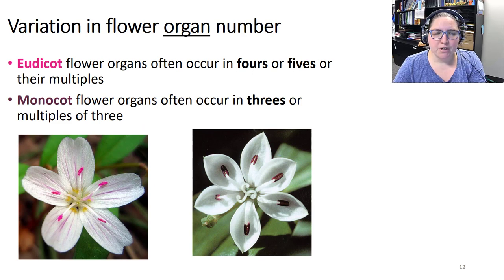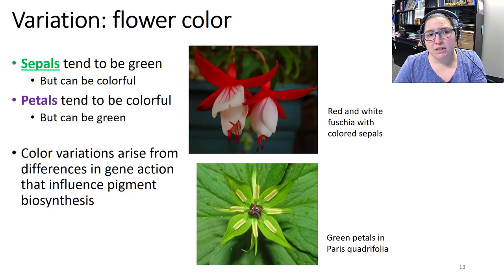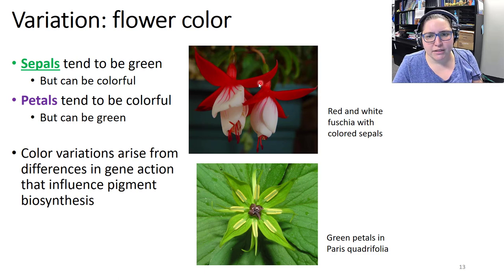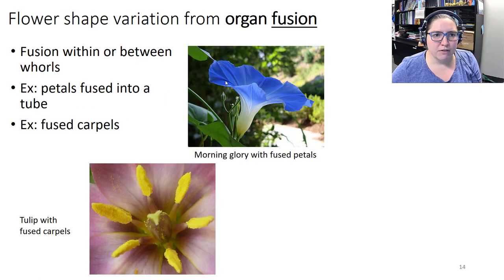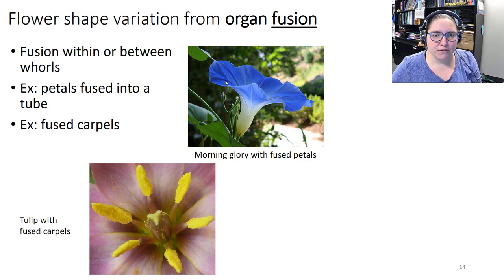Eudicot flower organs often come in fours or fives or multiples thereof, while monocots often have flower organs in threes or multiples of three. As far as flower color goes, sepals tend to be green but can be colorful, and petals tend to be colorful but can be green. Color variations arise from differences in gene action that influence pigment biosynthesis. Flower shape can also vary because organs can fuse — you can have petals fused into a tube or fused carpels.